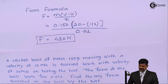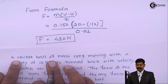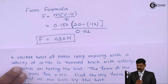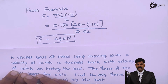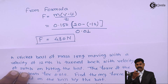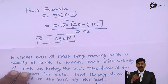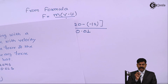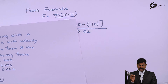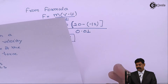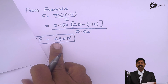So when a cricket ball of certain mass is moving with a certain velocity and is turned back with a velocity of 20 meter per second, and it strikes the bat for 0.01 second, the average force exerted by the bat on the ball is 480 newton.